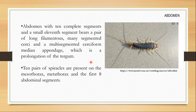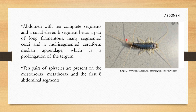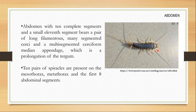The abdomen has 10 complete segments. There is a small 11th segment which bears a pair of long filamentous multi-segmented cerci. In addition to this pair of cerci, they also have a multi-segmented cercus-like median appendage, which is a prolongation of the tergum — the dorsal chitinous plate. For the 11th segment, the tergum gets extended and forms this cercus-like median appendage.